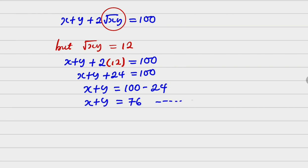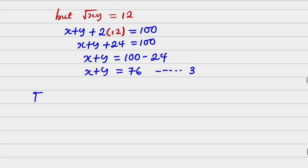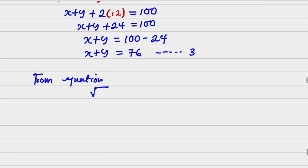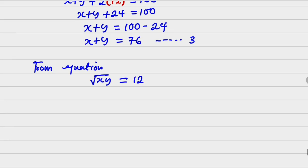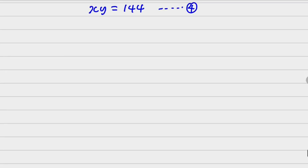We'll call this equation three. Now recalling equation two, we saw that √(xy) = 12. Squaring both sides just as we did in equation one, we get xy = 144. This will be equation four. So we've reduced everything to: x + y = 76 (equation three) and xy = 144 (equation four).